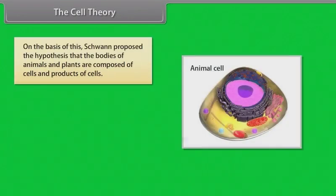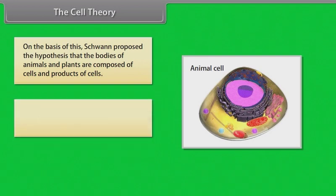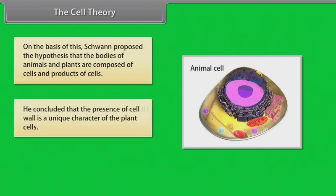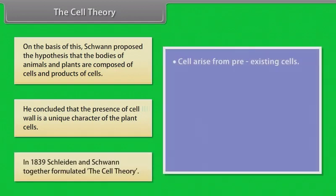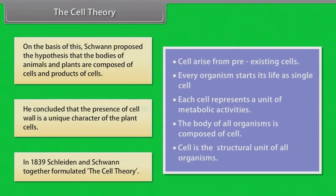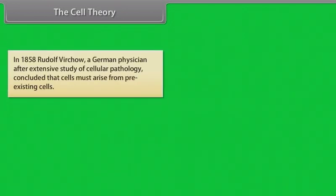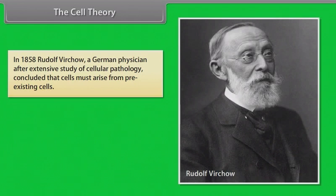On the basis of this, Schleiden proposed the hypothesis that the bodies of animals and plants are composed of cells and products of cells. He concluded that the presence of cell wall is a unique character of plant cells. In 1839, Schleiden and Schwann together formulated the cell theory. In 1858, Rudolf Virchow, a German physician, after extensive study of cellular pathology, concluded that cells must arise from pre-existing cells.